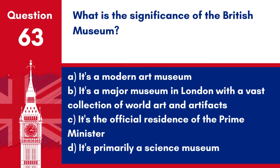Question 63. What is the significance of the British Museum? A. It's a modern art museum. B. It's a major museum in London with a vast collection of world art and artefacts. C. It's the official residence of the Prime Minister. D. It's primarily a science museum. Answer: B. It's a major museum in London with a vast collection of world art and artefacts. The British Museum is known for its extensive collection, representing the cultural history of the world.